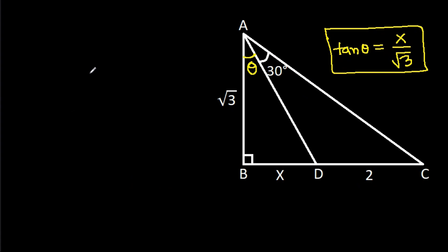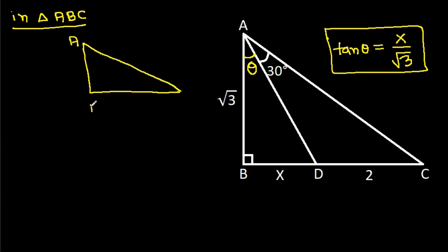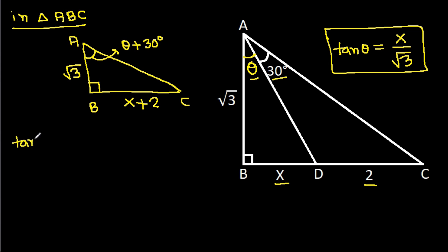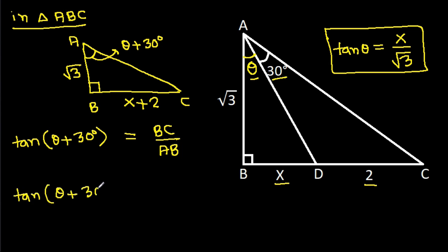And now in triangle ABC: BC will be X plus 2, AB is square root of 3, this angle is 90 degrees, and this angle will be theta plus 30 degrees. So tan(theta + 30°) will be equal to BC by AB, which gives tan(theta + 30°) equals (X + 2) by square root of 3.